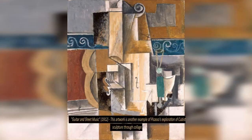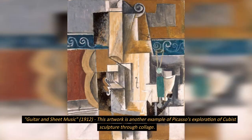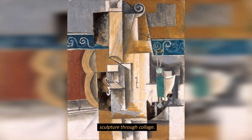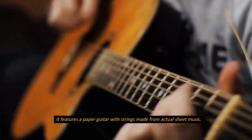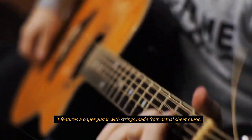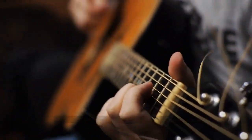Guitar and Sheet Music, 1912. This artwork is another example of Picasso's exploration of cubist sculpture through collage. It features a paper guitar with strings made from actual sheet music.